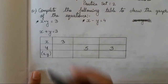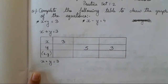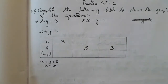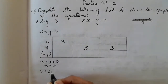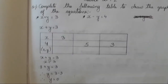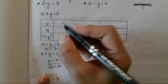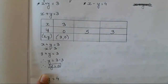We have to take the equation x plus y is equal to 3, where x is equal to 3 — already given in the question. So we substitute the value of x: 3 plus y is equal to 3, therefore y is equal to 3 minus 3, therefore y is equal to 0. So the answer for this row is (3, 0).